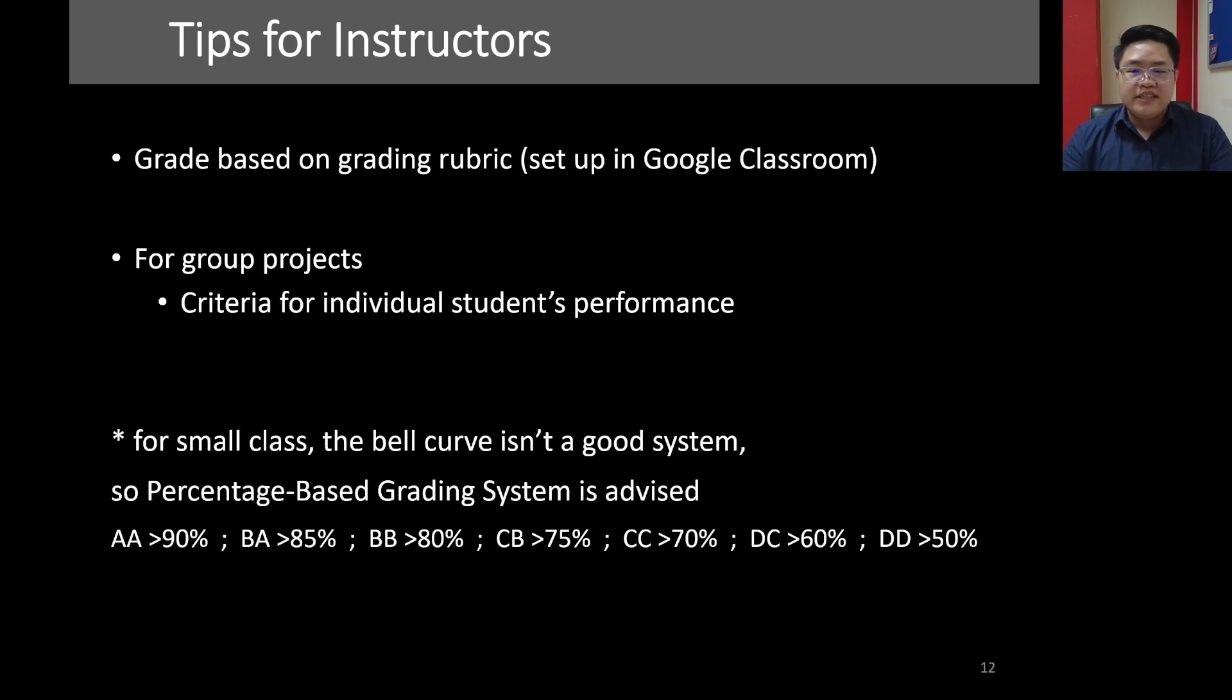This is where the bell curve system is not good. So for small class, let's say a class that has less than 10 students. It's a small class. So the sample size is not good for the bell curve. So in this case, I would recommend use the percentage based grading. Percentage based means, let's say, this is just an example. If the student got the overall percentage of higher than 90%, straight AA, higher than 85% and lower than 90%, BA, and so on.